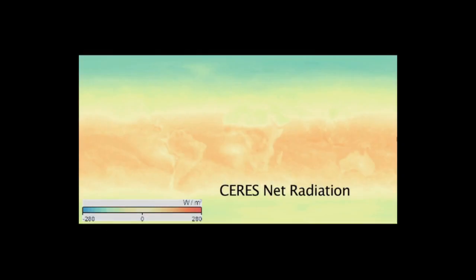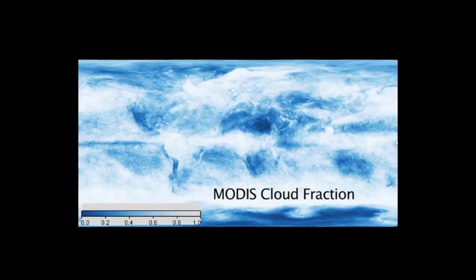CERES, Clouds and the Earth's Radiant Energy System, is an instrument in several NASA Earth-observing satellites that tracks the amounts of long-wave terrestrial radiation and reflected short-wave solar radiation to help us better understand Earth's climate system. CERES monitors radiation levels. MODIS monitors the amount of cloud cover.